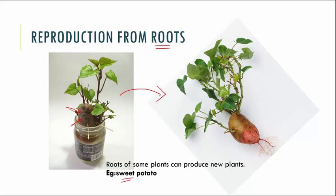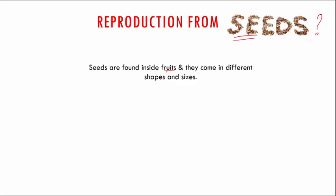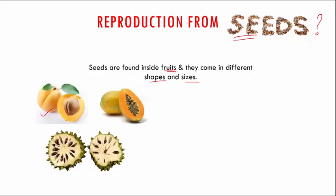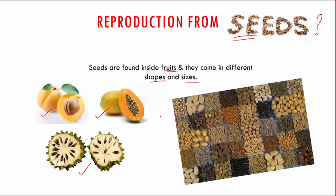Now let us see reproduction from seeds. Most plants reproduce with the help of seeds. These seeds are found inside fruits and come in different shapes and sizes. Examples include seeds of peaches, papaya, and custard apples — all found inside the fruit. There are also hard seeds. When these seeds are sown into soil, they start growing into a new plant.